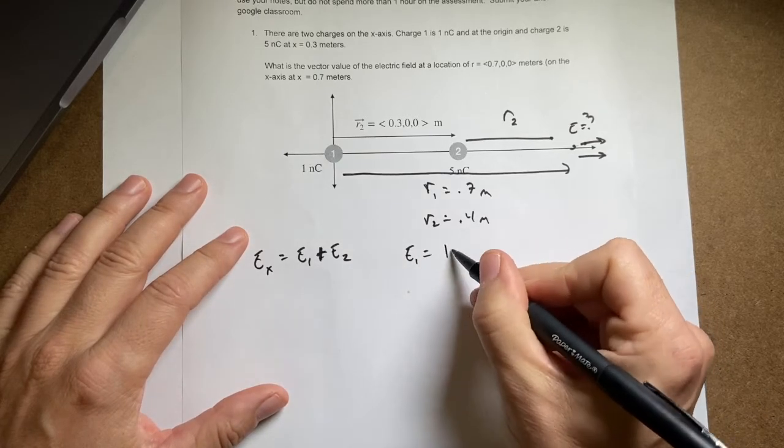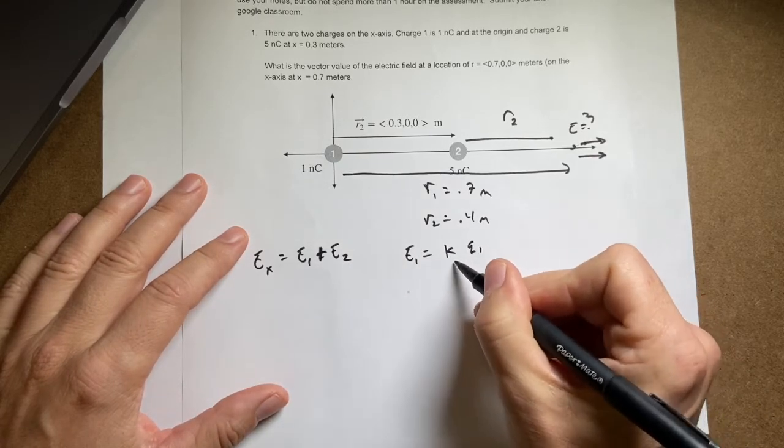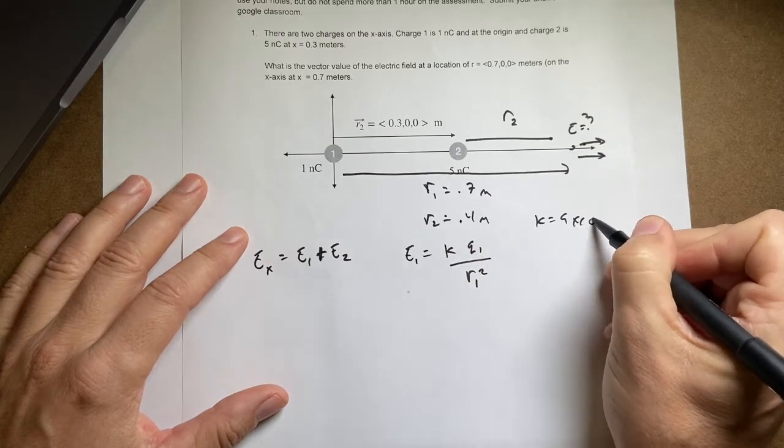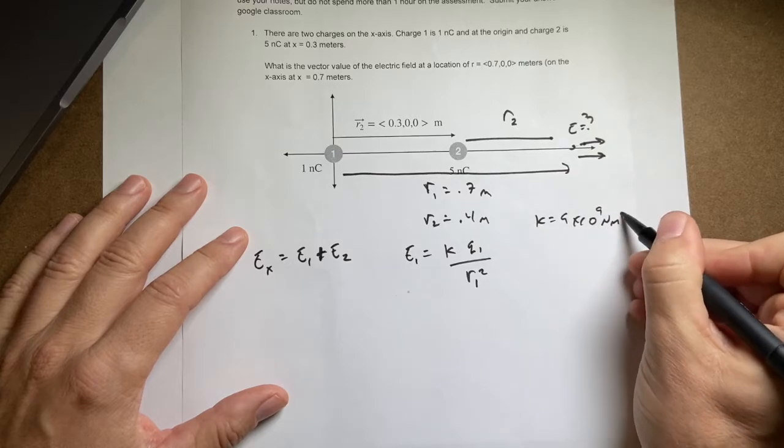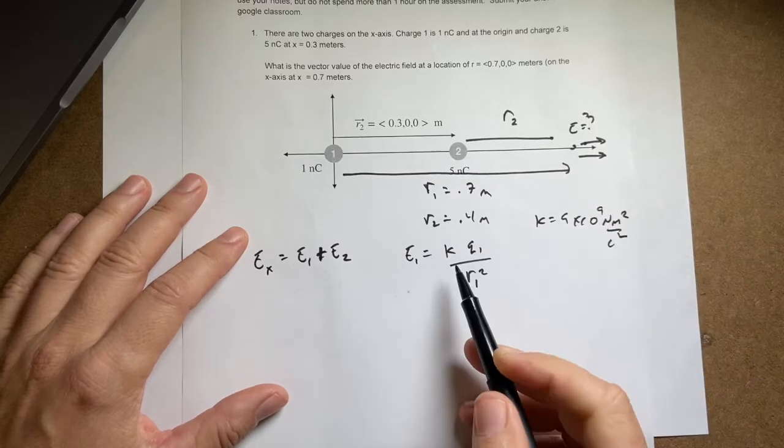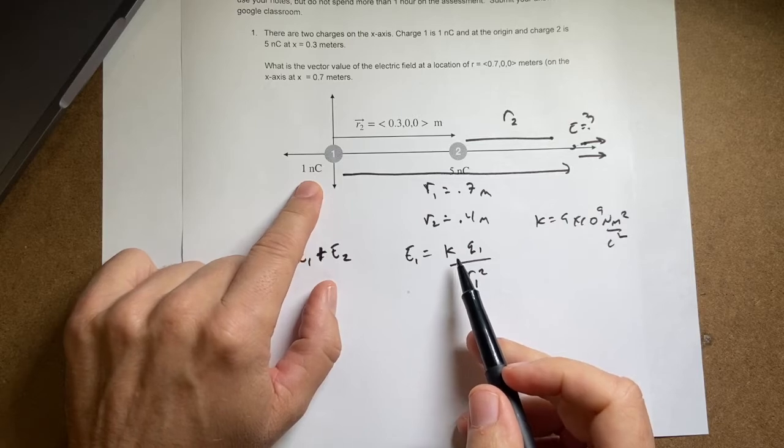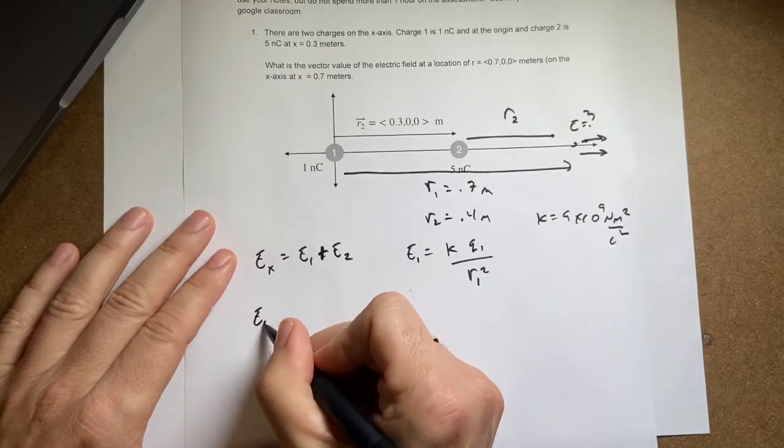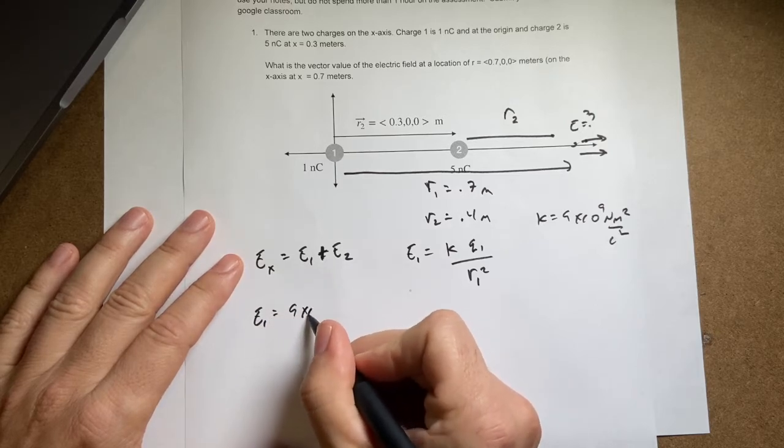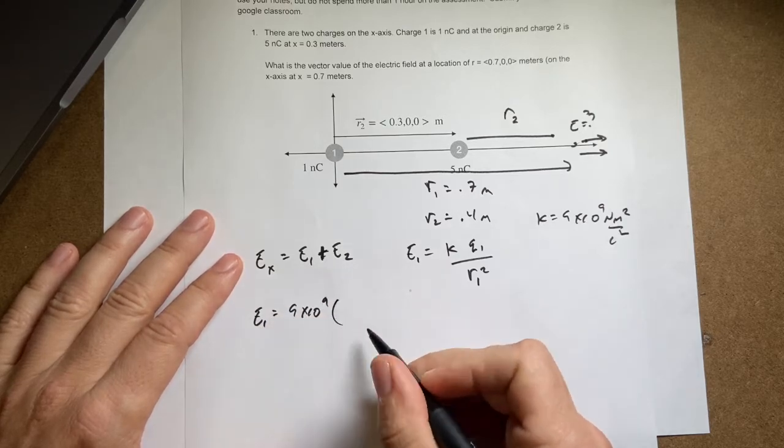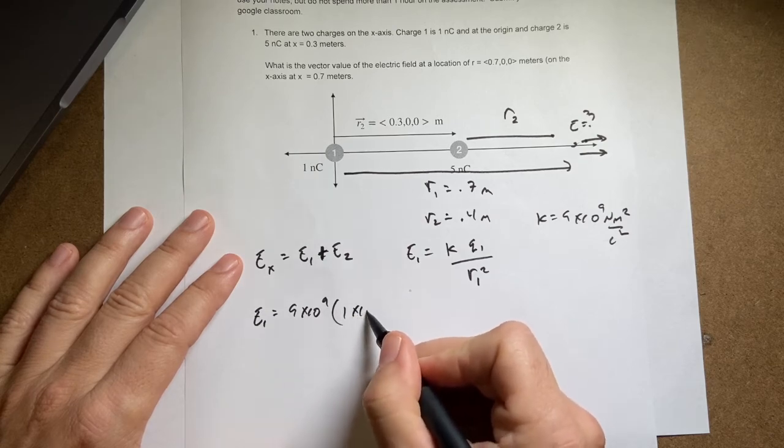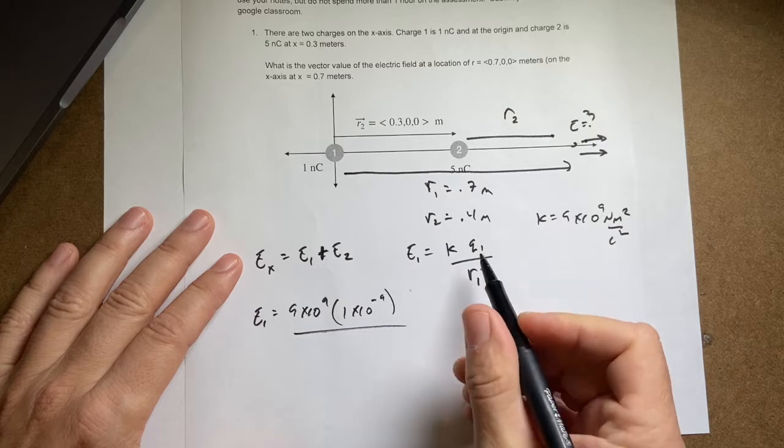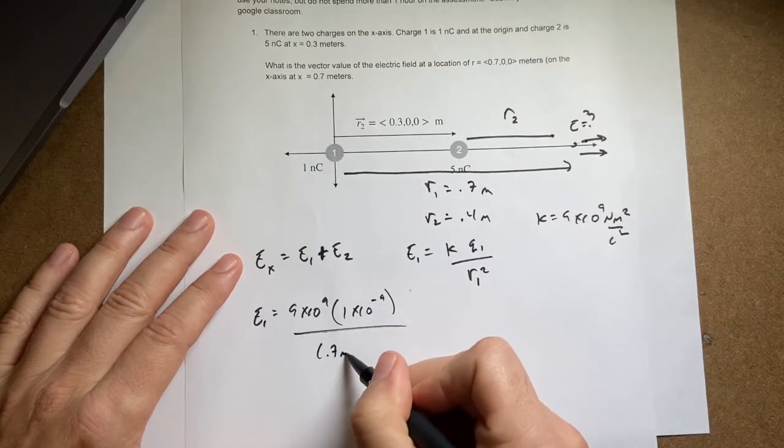So the electric field E1 is going to be K times Q1 over R1 squared. Where K is 9 times 10 to the 9th newton meters squared per coulomb squared. And Q1 is 1 times 10 to the negative 9th coulombs. So I can calculate that. E1 is going to be equal to 9 times 10 to the 9th times 1 times 10 to the negative 9th divided by this distance squared, and we said that was 0.7, so 0.7 meters squared.